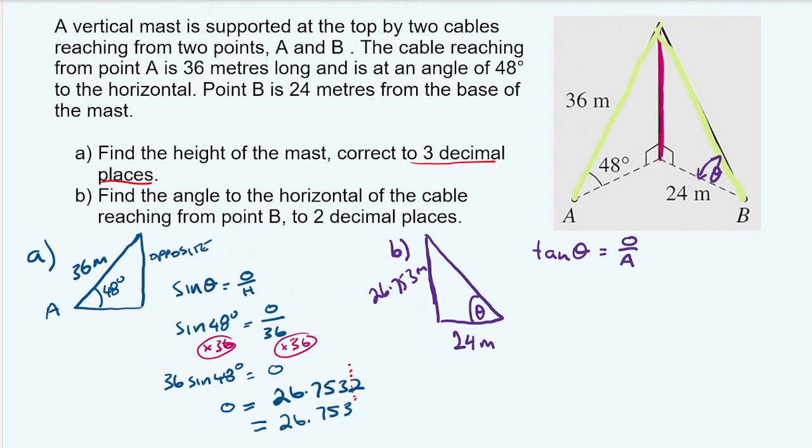So we want the tan ratio for this one. Now we plug in what we know. We don't know theta yet, so it will stay the same. Opposite side, well that's going to be our 26.753 all over 24.